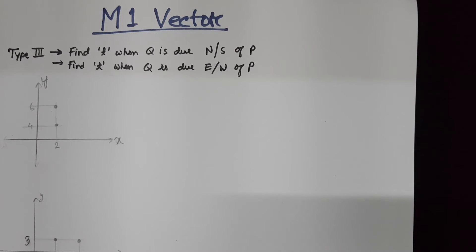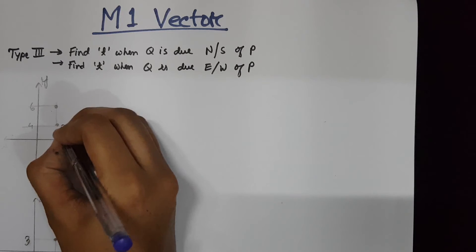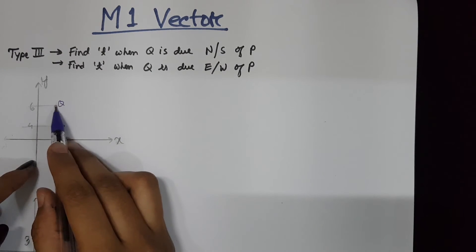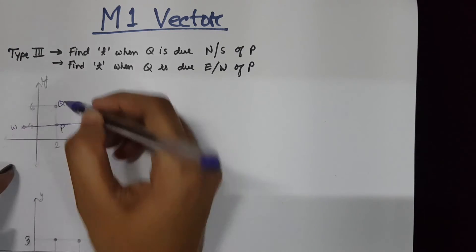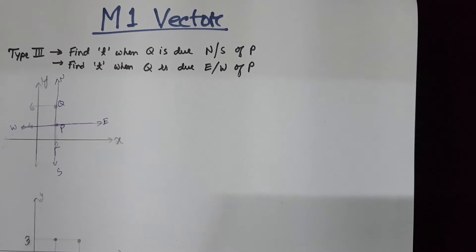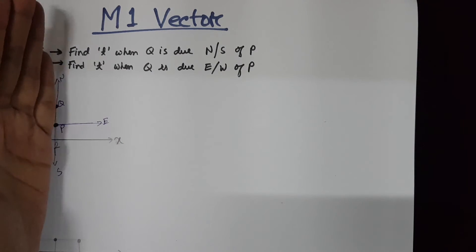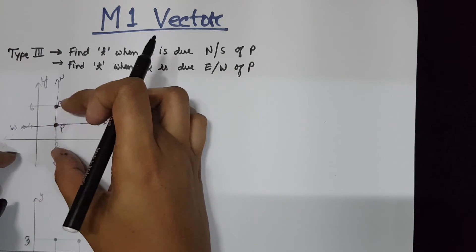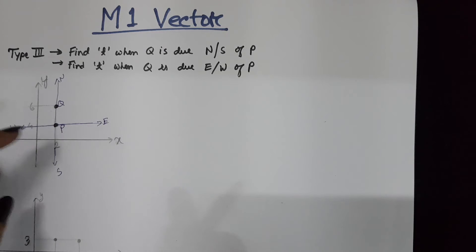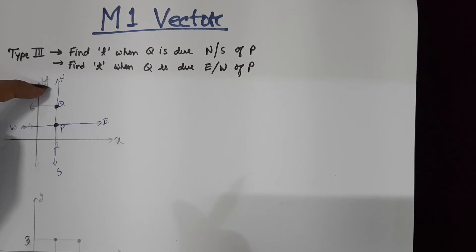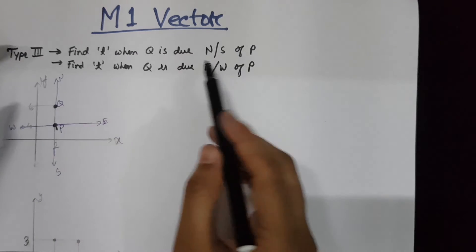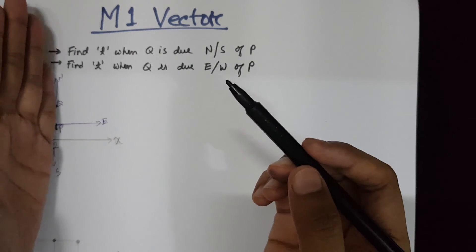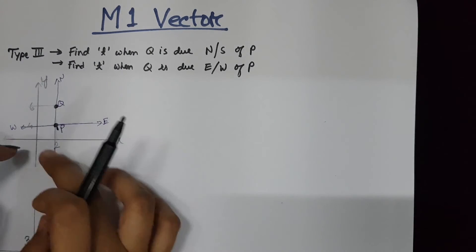Suppose we need to find the time when one particle is in a direction due north of another particle. If P is at (2, 4) and Q is at (2, 6), they lie on the same vertical line relative to the east-west-north-south axes. The y-coordinates differ but the x-coordinate is 2 for both. So whenever the direction is north or south, the x-coordinate (i-component) of both particles must be the same.